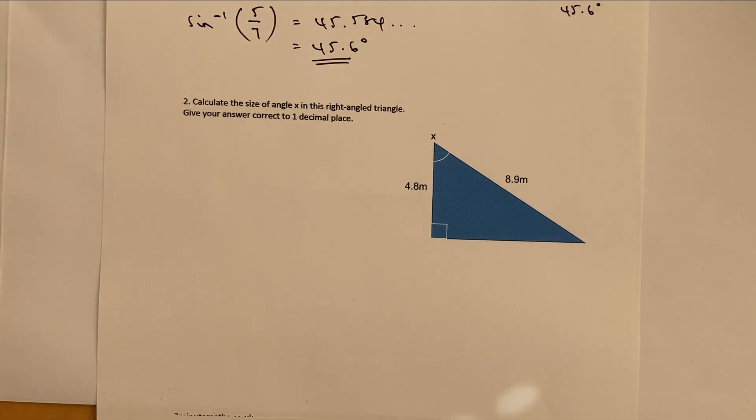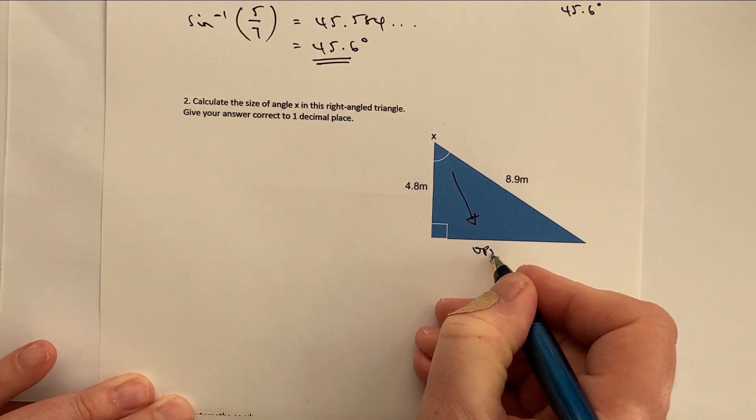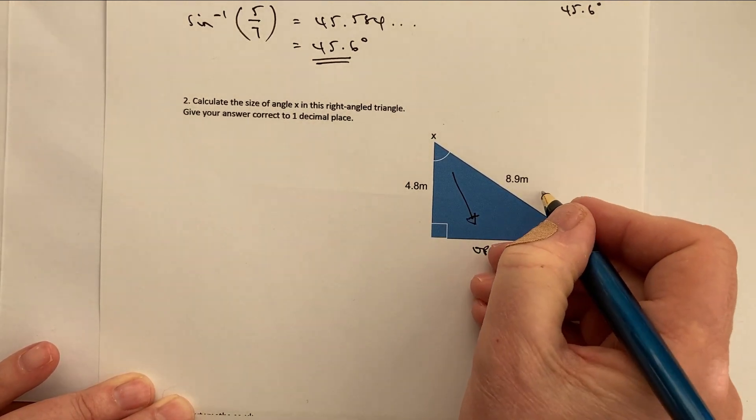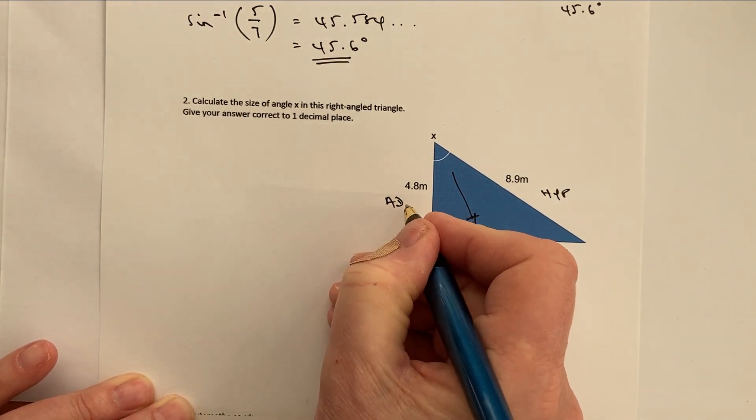So part two, then, is going to be exactly the same process, where the first thing I'm going to do is I'm going to label the triangle. This is the opposite. The longer side is always the hypotenuse, and the one that's left is the adjacent.